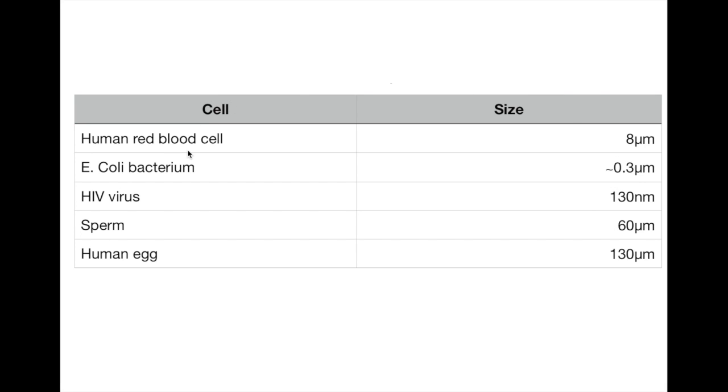The human red blood cell is about 8 micrometers. The E. coli bacterium is approximately 0.3 micrometers. The HIV virus is only 130 nanometers. The sperm is 60 micrometers, while the human egg is much larger, about twice its size at 130 micrometers.